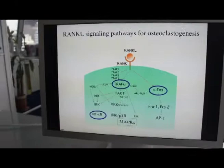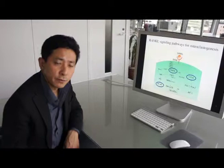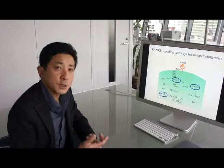But other cytokines, like RL1, can activate NF-kappa-B, TRF-6, or C-FOS, but cannot induce osteoclast differentiation. So we suspected that RANKL induced a hitherto unknown transcription factor which is essential for osteoclast differentiation.